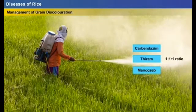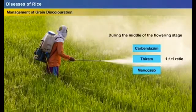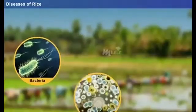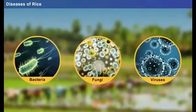Grain discoloration can be prevented by spraying carbendazim, pyrimethanol, and mancozeb at a 1:1:1 ratio during the middle of the flowering stage.